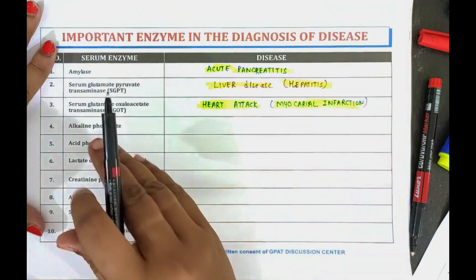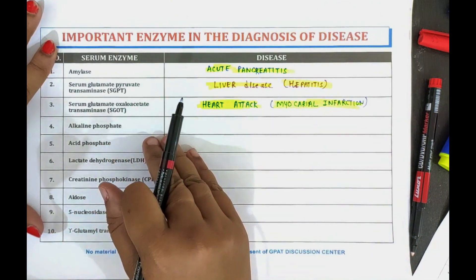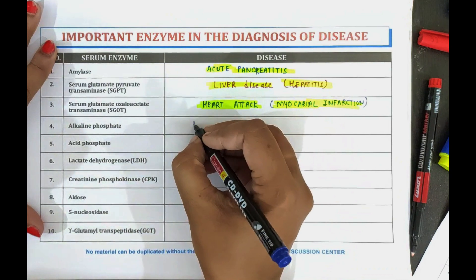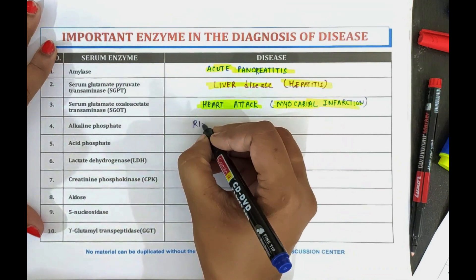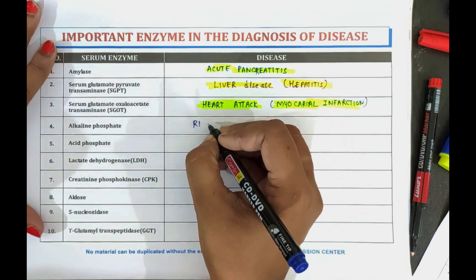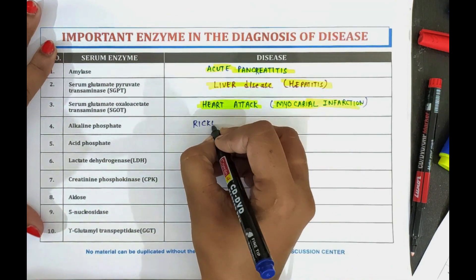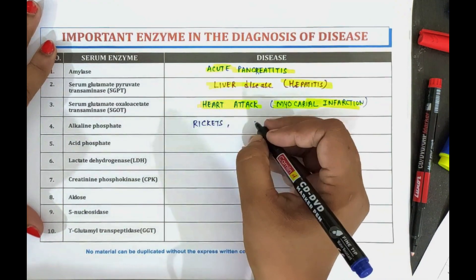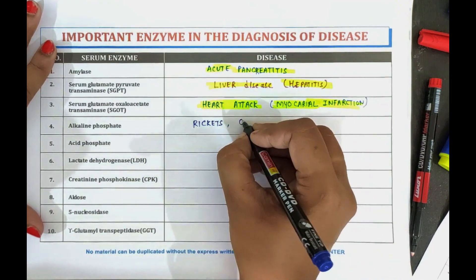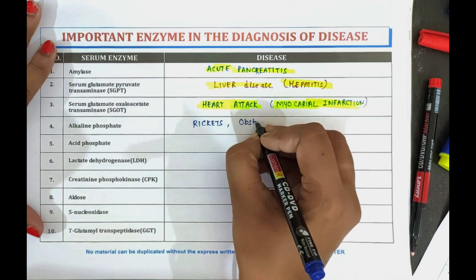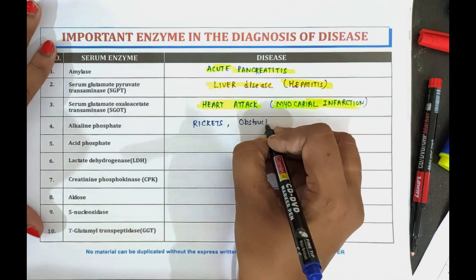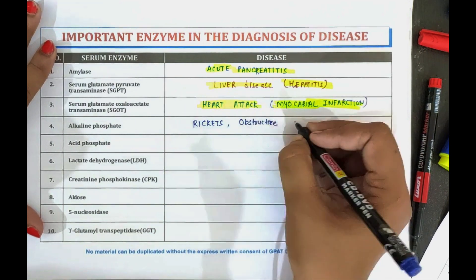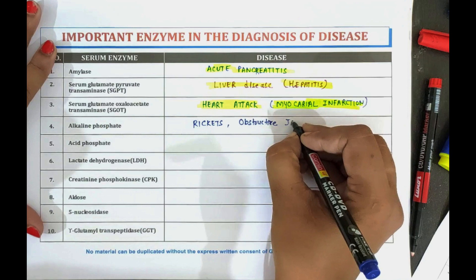Now coming towards the next one, which is alkaline phosphatase. The alkaline phosphatase enzyme is used to detect rickets and obstructive jaundice.